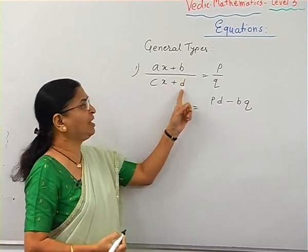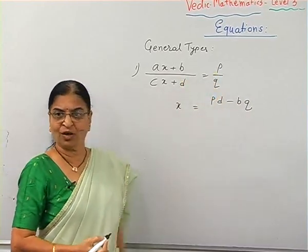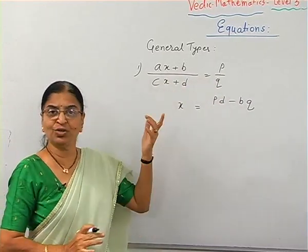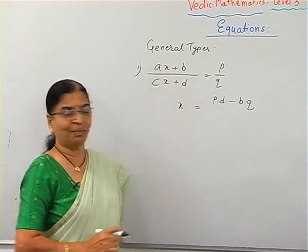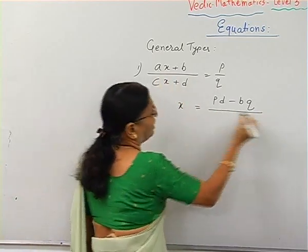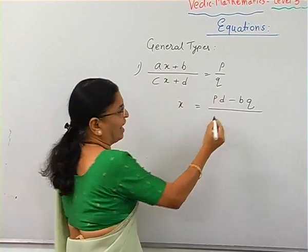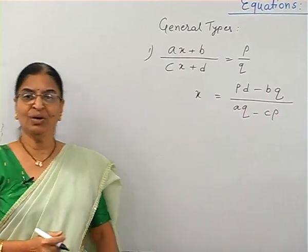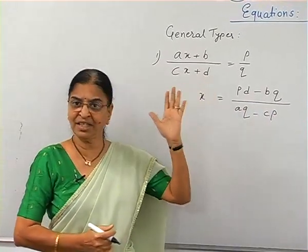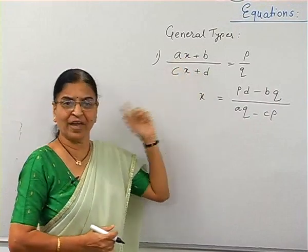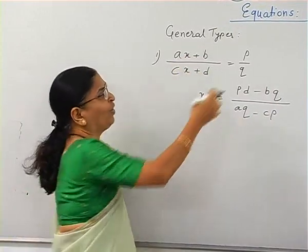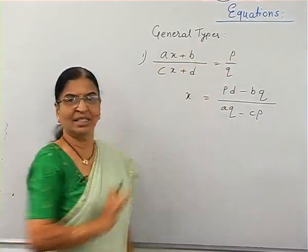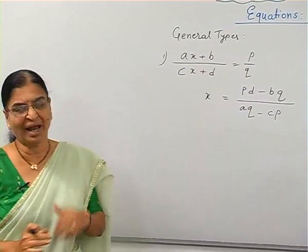Here, B, D, P, and Q are constant terms. When you cross multiply, to make it simple you cross multiply, and then Q will go to A, so it will be AQ minus CP. So generally, if this type of equation is there and the coefficients of X are different, you cross multiply to get PD and BQ in the numerator, and AQ and CP in the denominator.